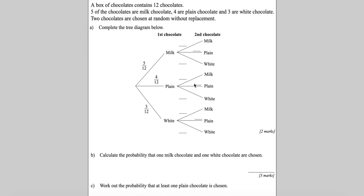We're looking at a question where you have a box of 12 chocolates in total. There are three types: milk, plain, and white, with five milk, four plain, and three white. We're going to pick two chocolates at random without replacement. The detail about without replacement is important in a tree diagram.